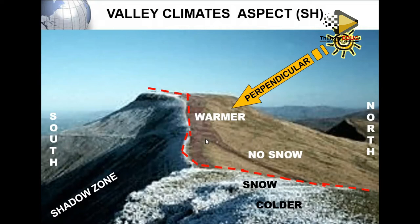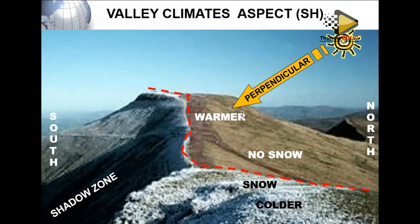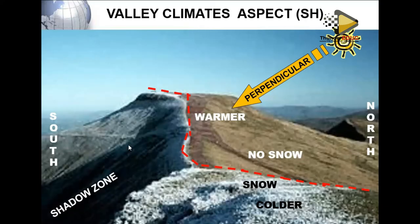Now we look at how slope aspect influences human activities — plantation, growing of crops, settlement. In the southern hemisphere, the slope facing north is warmer than the slope facing south because it experiences direct, perpendicular sun rays. The south-facing slope experiences slanting angles of the sun, lies in a shadow zone, and will be cooler.